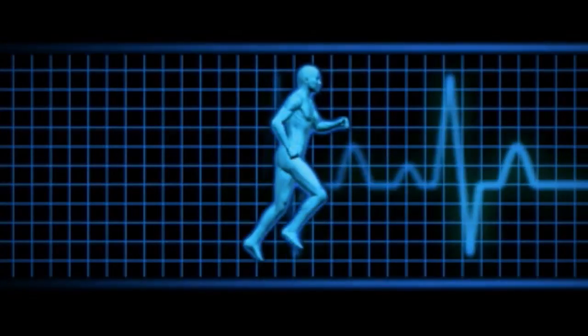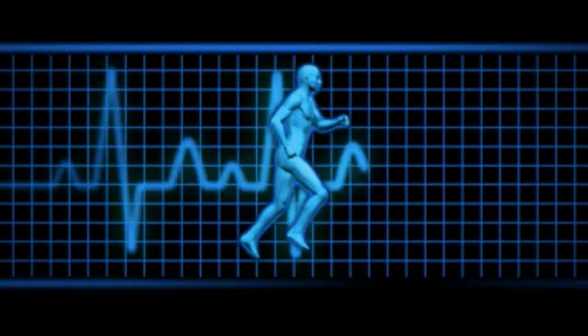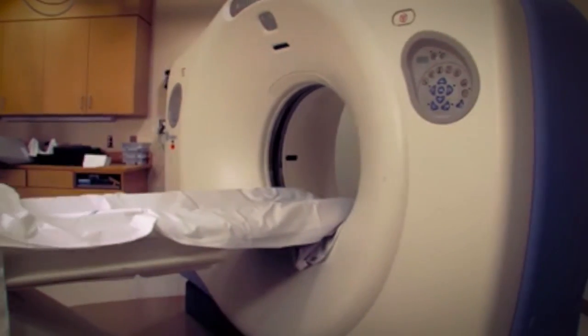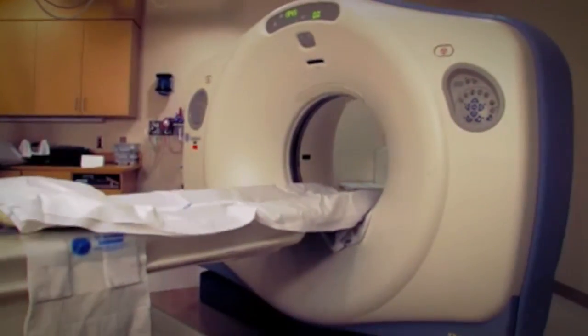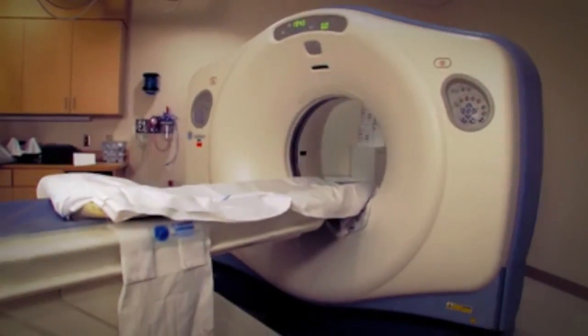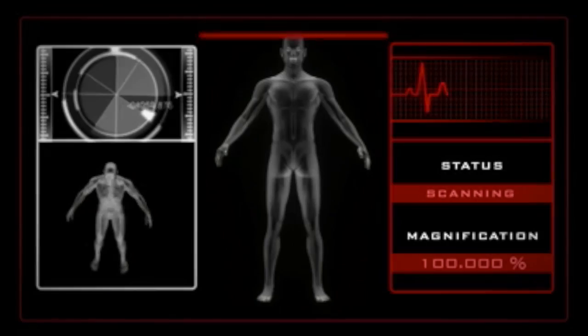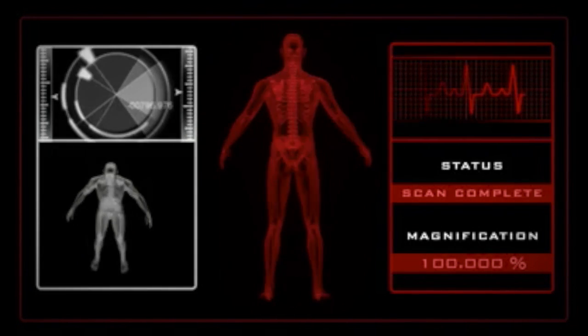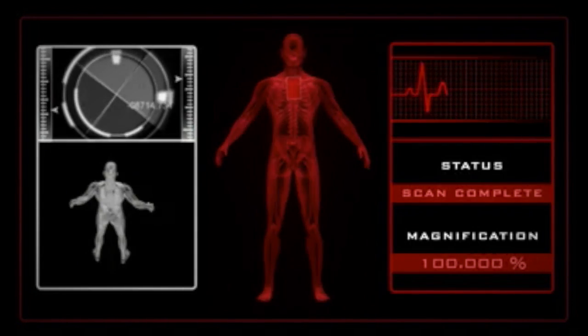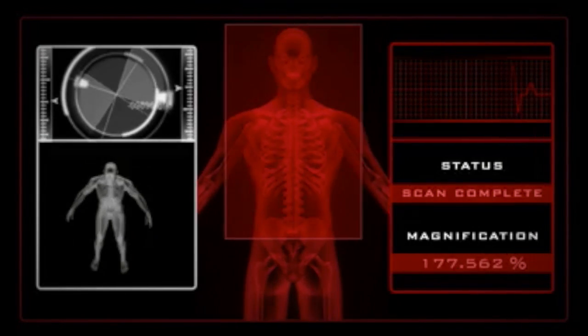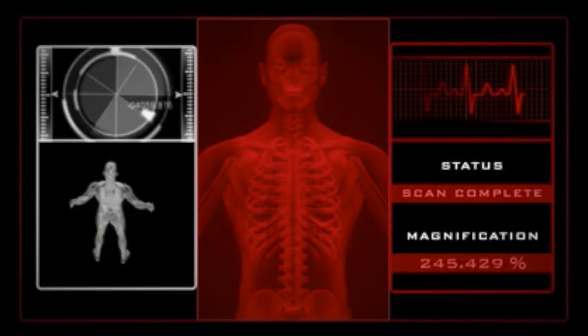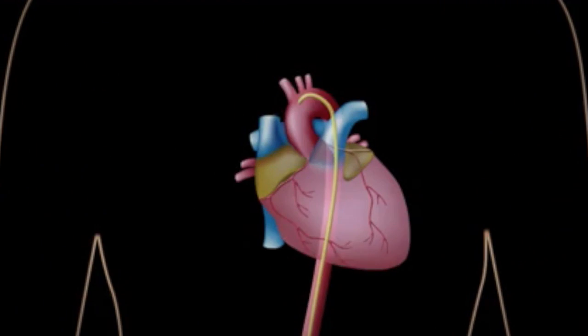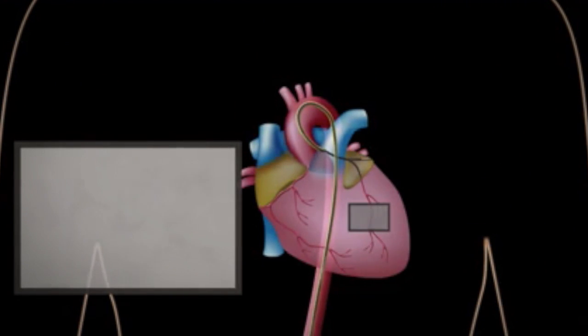An exercise stress test will help determine if the heart responds normally to the stress of exercise. Radionuclide ventriculography, or Multiple Gated Acquisition Scanning, aka a MUGA scan, shows how well the heart muscle is supplied with blood. It also shows how well the heart's chambers are working and whether part of the heart has been damaged by a heart attack. Cardiac catheterization. This will help determine if there is a blockage in the coronary arteries.